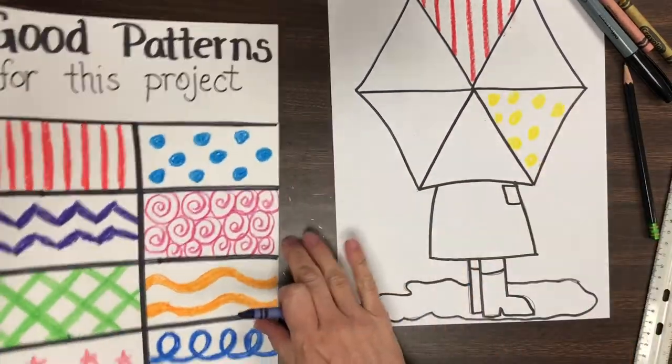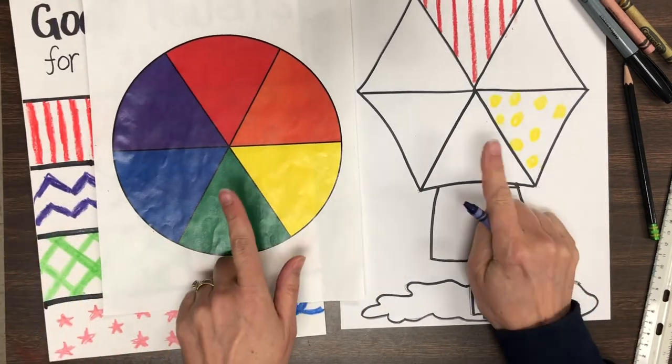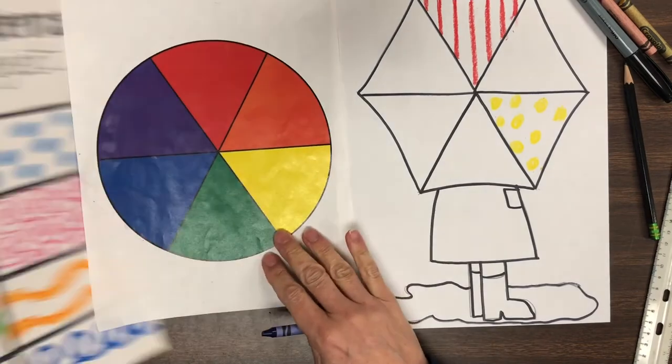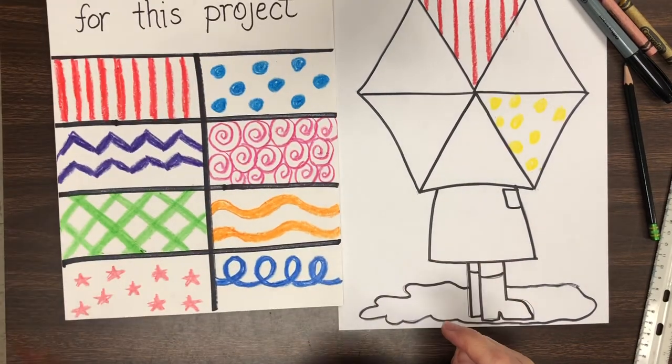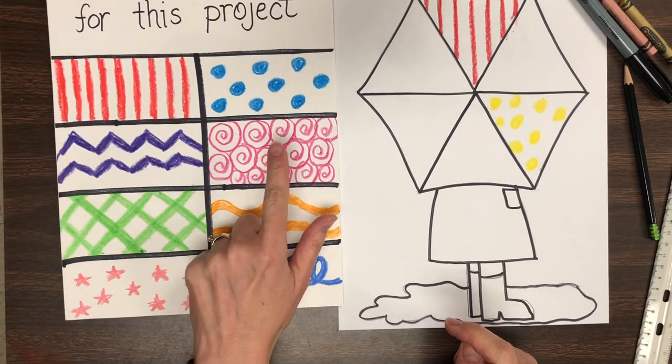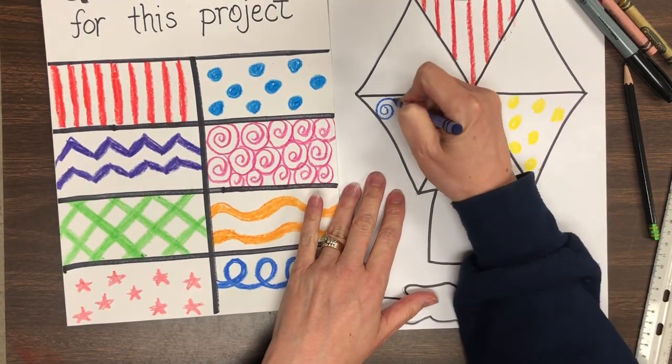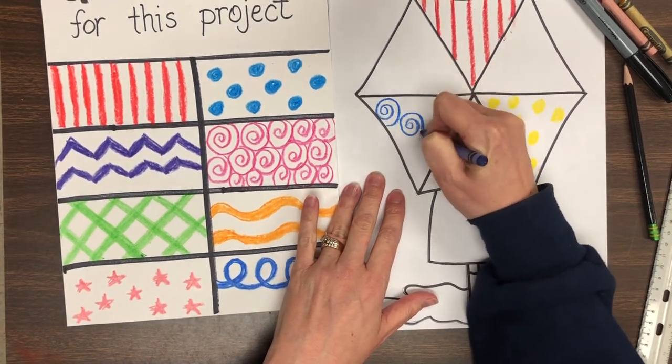So it looks like today I need one more pattern for my blue crayon. I'm going to skip the green space and go right to the blue spot. And that is where I'm going to do—I think I'll choose the spirals or the swirls. And I'm going to fill that section with my blue crayon pattern.